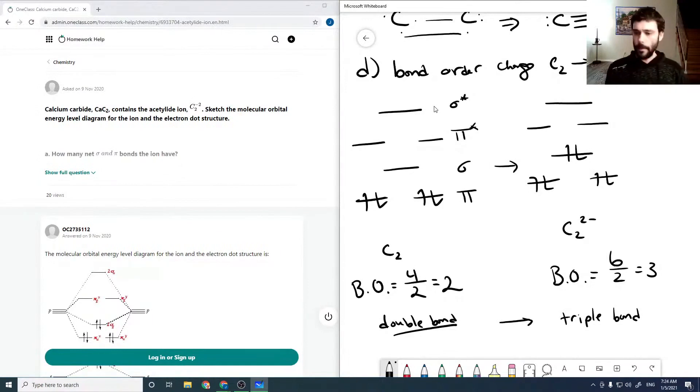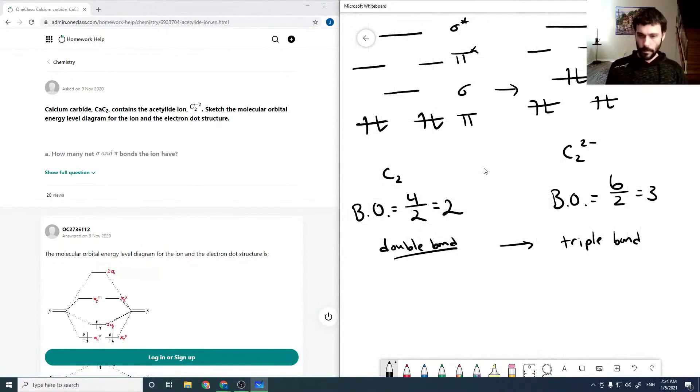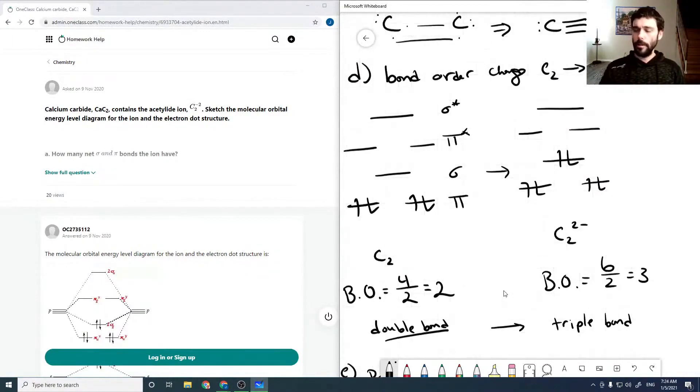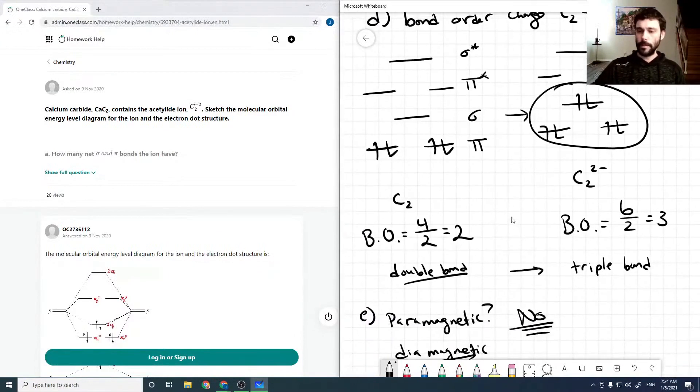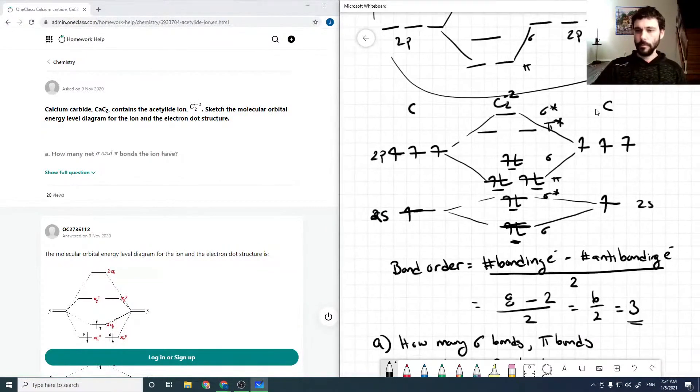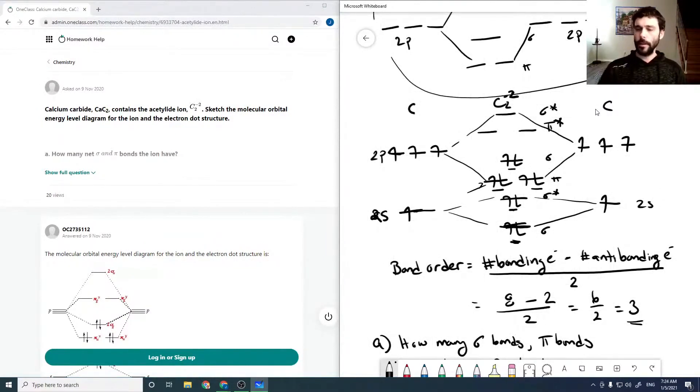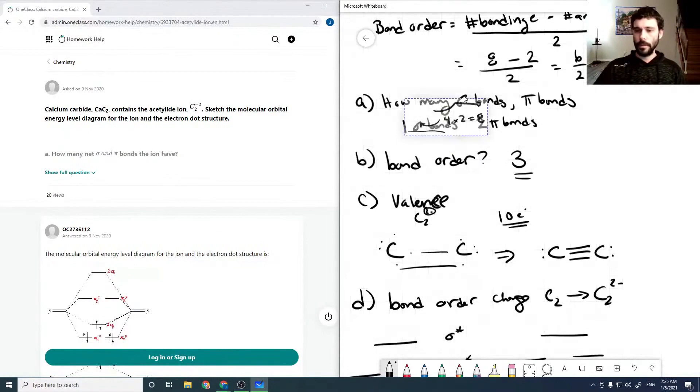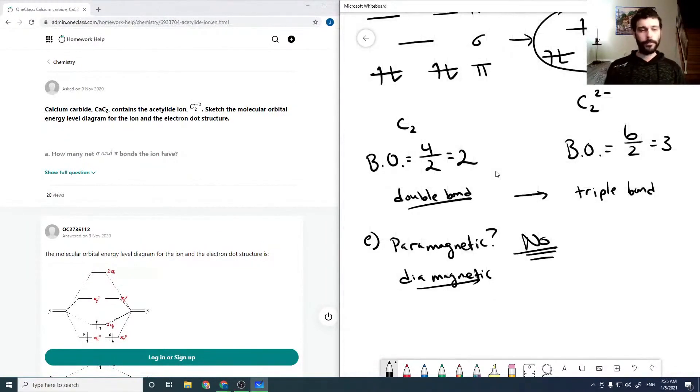And then the last question is, is it paramagnetic? And the answer is no. It's diamagnetic. And it's diamagnetic because all the electron spins are paired in our MO diagram. So we need unpaired spin for it to be paramagnetic. And so just to reiterate this, if we look at our MO diagram, all the spins of all the electrons are paired. And so it will be diamagnetic.